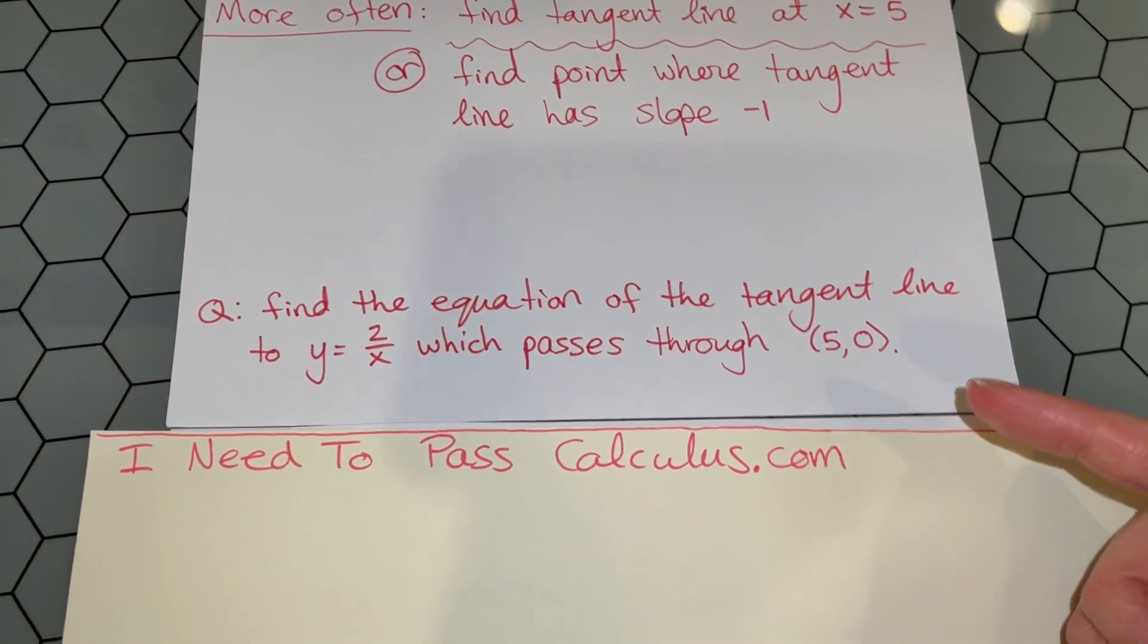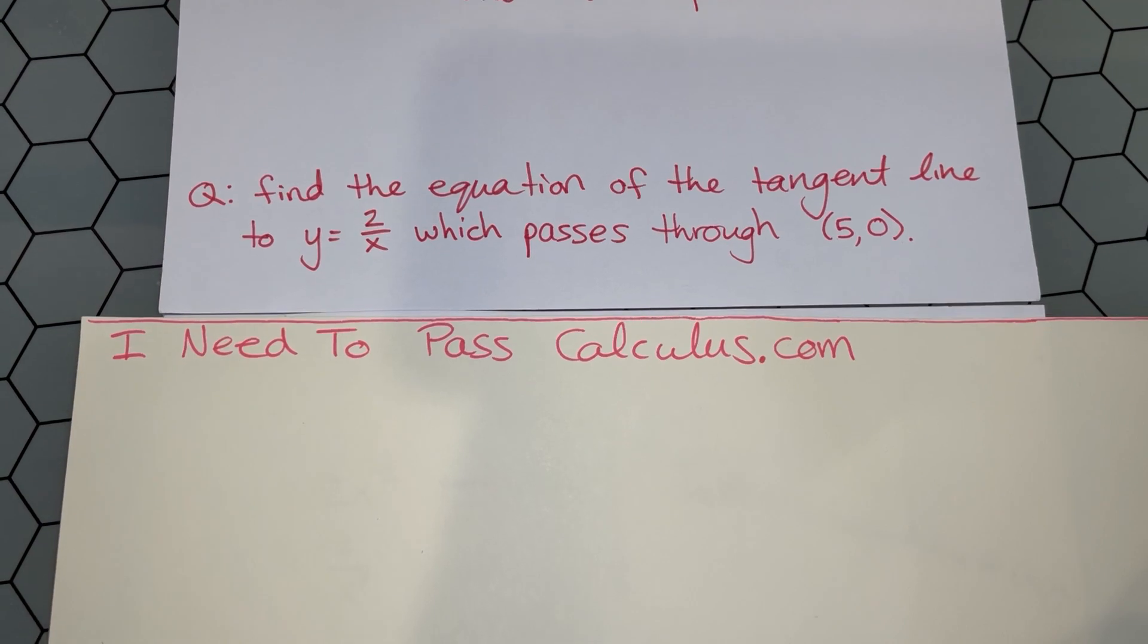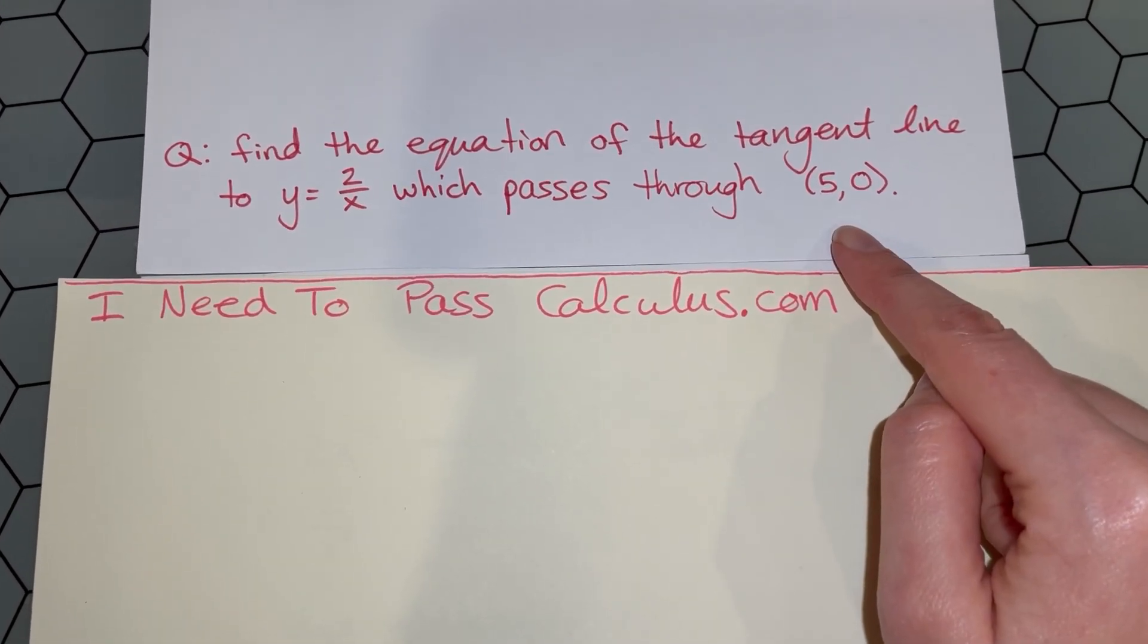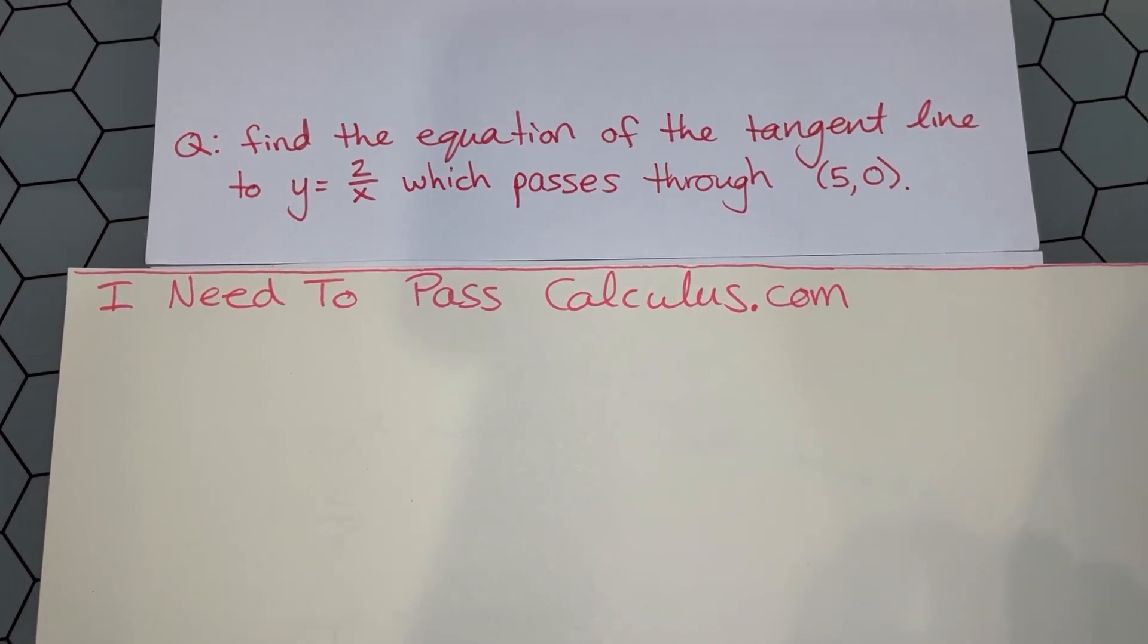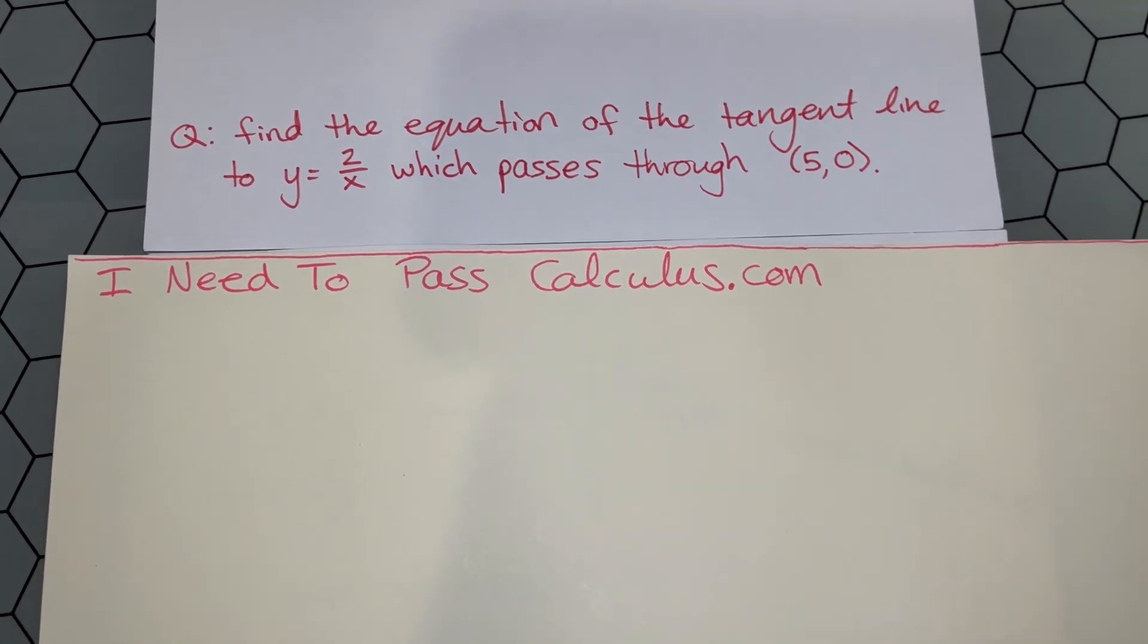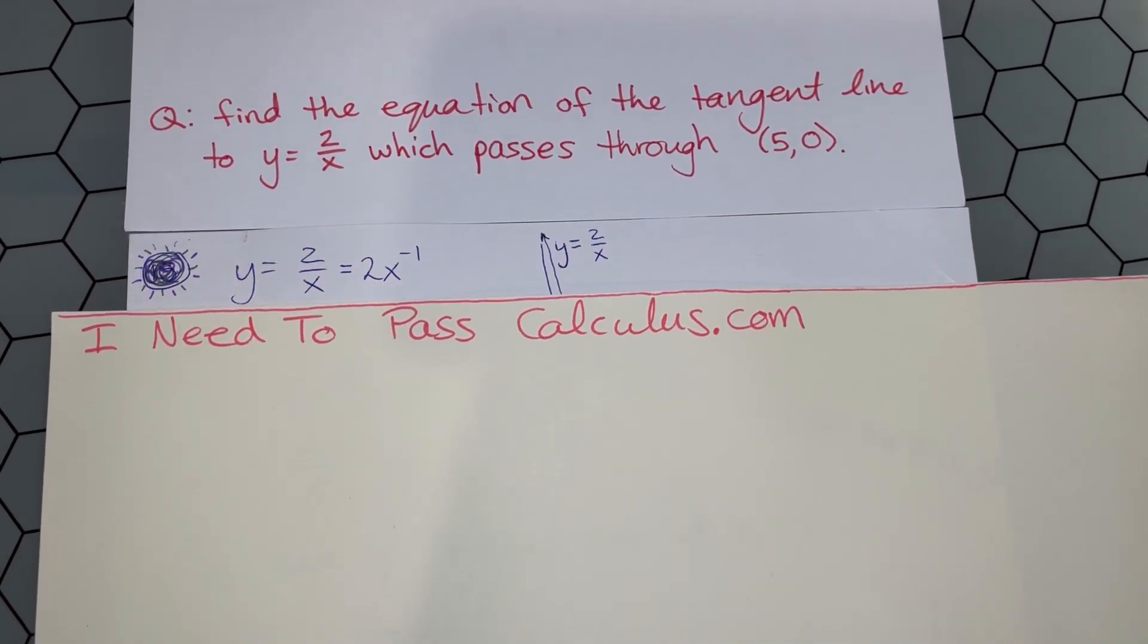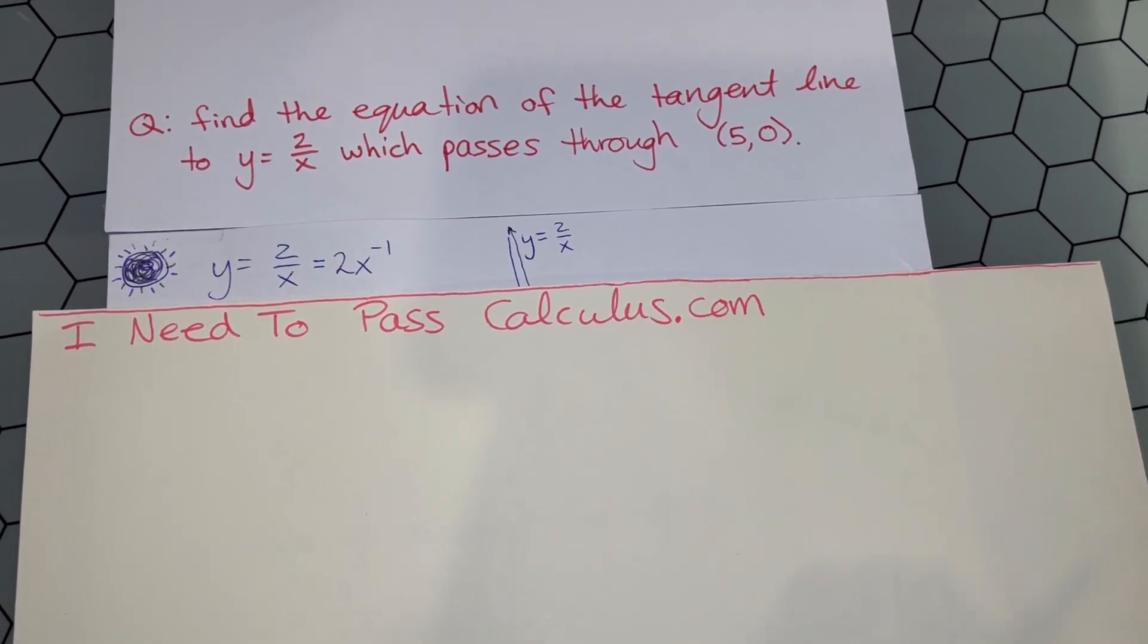This is a bit of a curveball because they do not tell you the x value where you're building your tangent line. This point (5, 0) is actually not where you're building the tangent line, and they don't tell you what slope the tangent line has to have. So it's a third category where you have to be a little more creative, but you still follow the same steps.